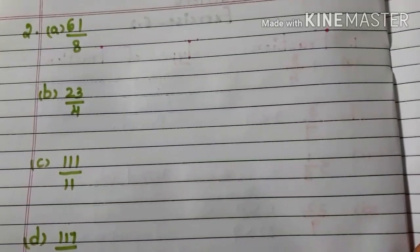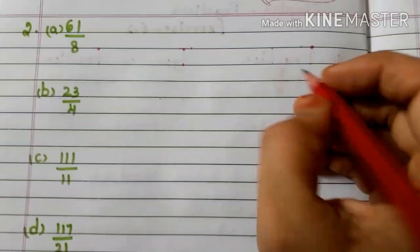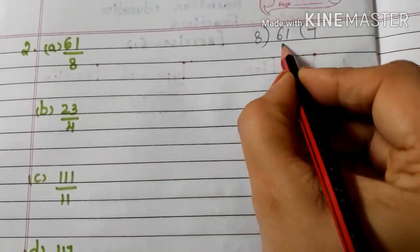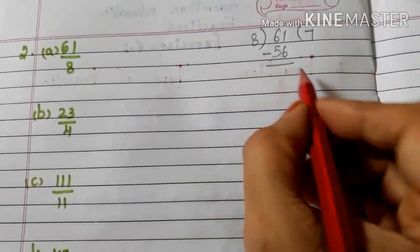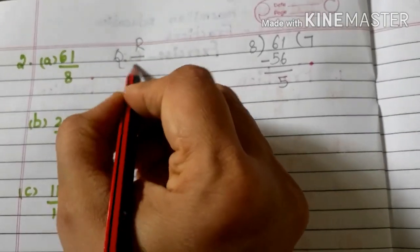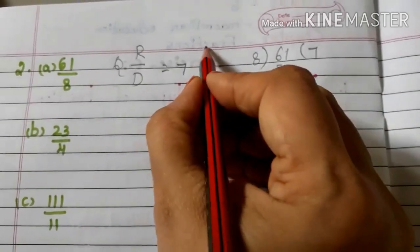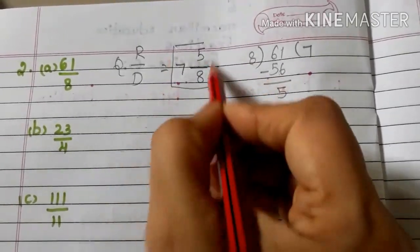Now question number 2: convert each of the following improper fractions into mixed fractions. A: 61/8. First, divide 61 by 8. 8 sevens are 56. 61 minus 56 is 5. Now write the mixed fraction as Quotient Remainder/Divisor. The quotient is 7, remainder is 5, divisor is 8. So the mixed fraction is 7 and 5/8.